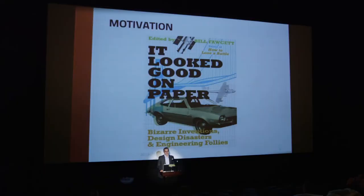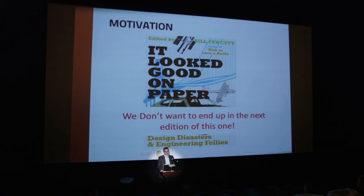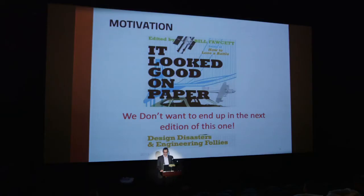So we don't want to end up in the situation that as an engineer, the system we are working on comes into the next edition of this book. It's about epic systems engineering failures — a very interesting read, in particular for non-technicians. I got this recommended by an economist, by the way. It's a good book for non-technicians to understand what can go wrong in systems engineering.